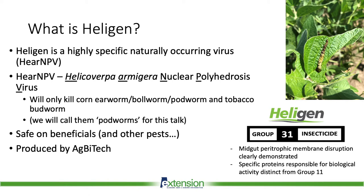This virus is produced by a company called Agbiotec. It was originally an Australian company. They moved to the U.S. in the early-to-mid 2000s. They're now in the Dallas-Fort Worth area where they produce this virus here in the U.S. It's a Group 31 insecticide — a mid-gut peritrophic membrane disruptor. Essentially the virus infects these worms and ruptures their mid-gut, and the virus begins to leak out and kill the worms.